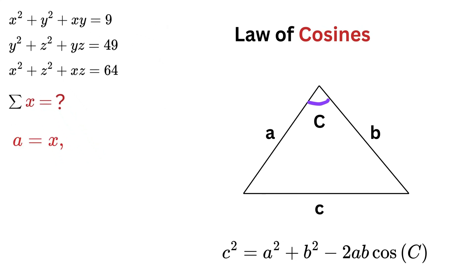Oh wow, can you see something? If I take a as x, b as y, and c as 3, then this becomes x² + y² - 2xy cos C = 3² or 9. Compare with this equation, and everything is the same except for the coefficient of xy, which is 1 here and it is -2 cos C here.